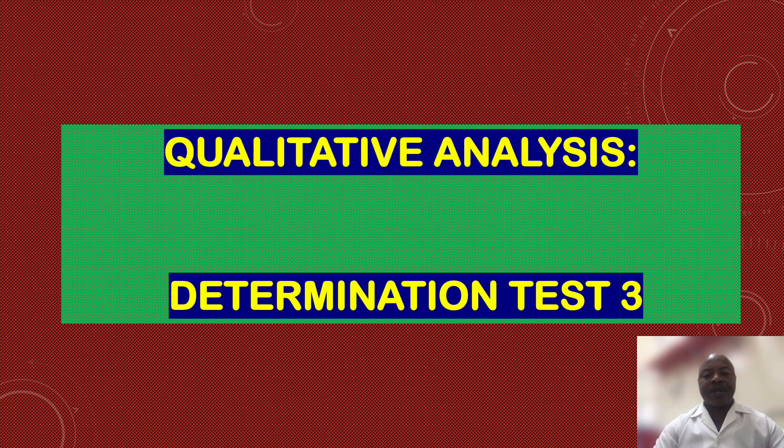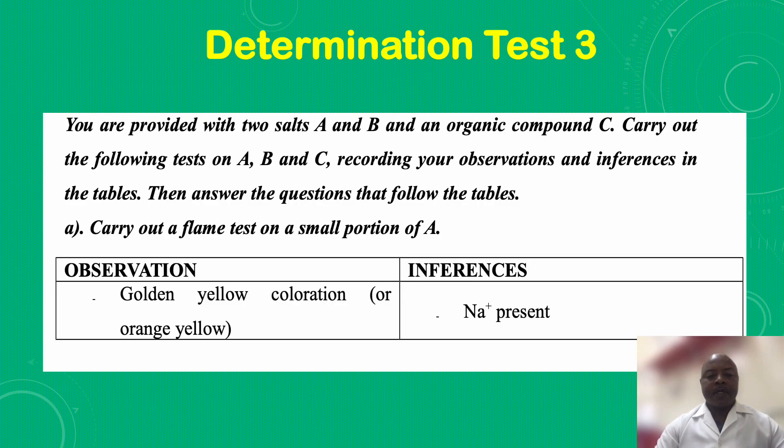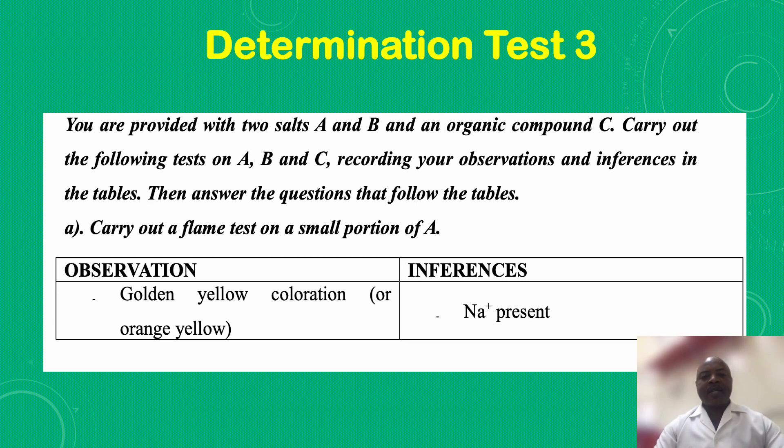Welcome to Determination Test 3. You are provided with two salts A and B and an organic compound C. Carry out the following tests on A, B, and C, recording your observations and inferences in the table. Then answer the questions that follow the table. Part A: Carry out a flame test on a small portion of A.